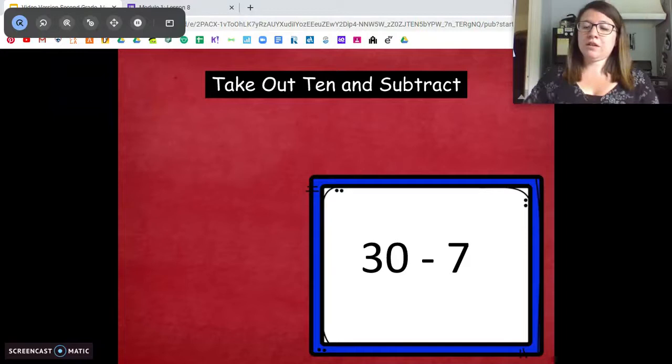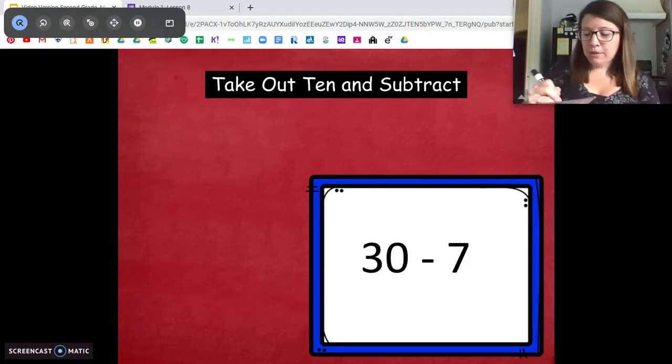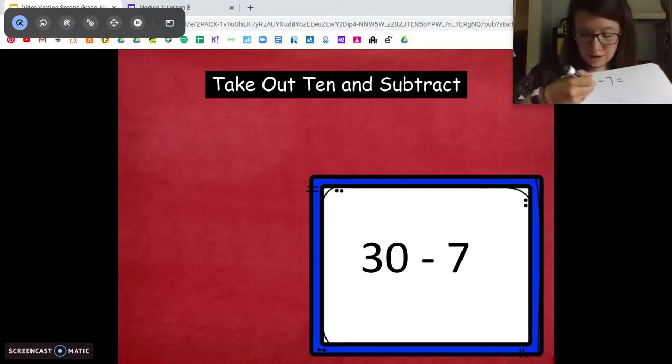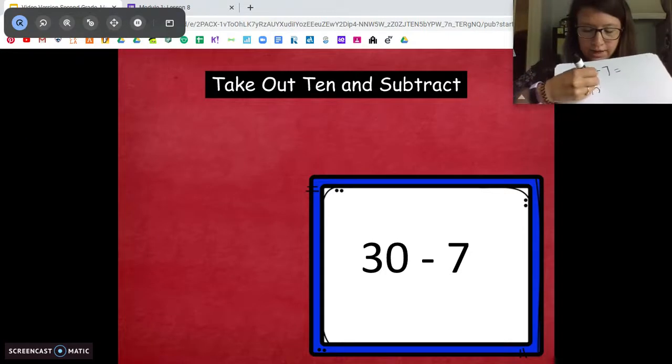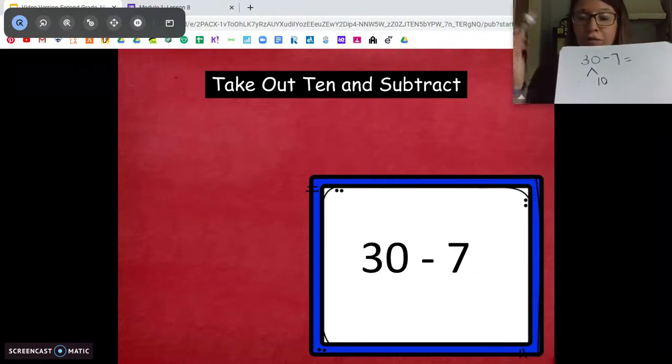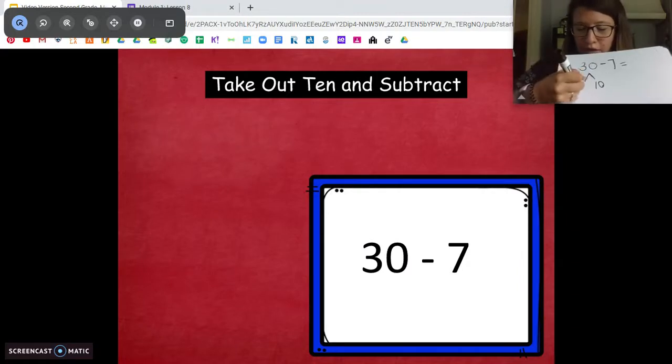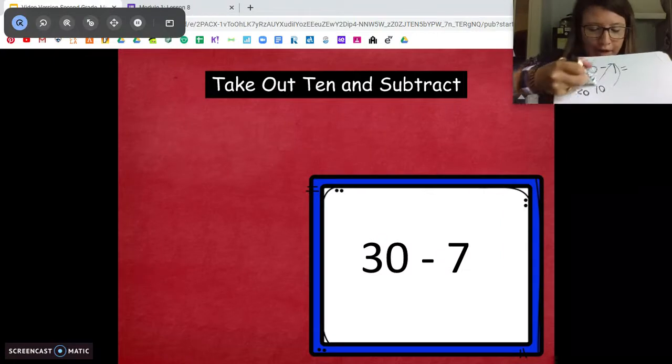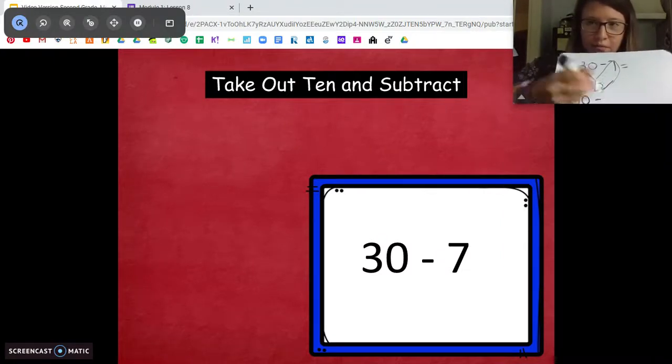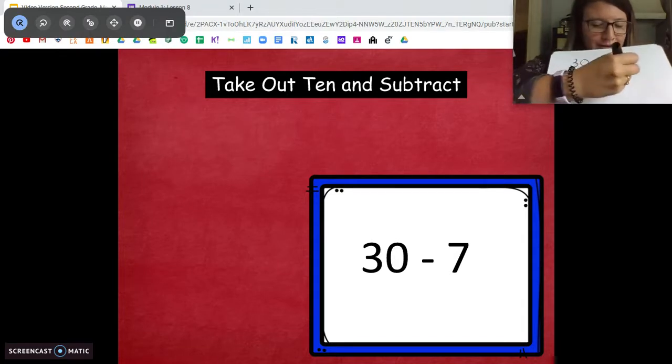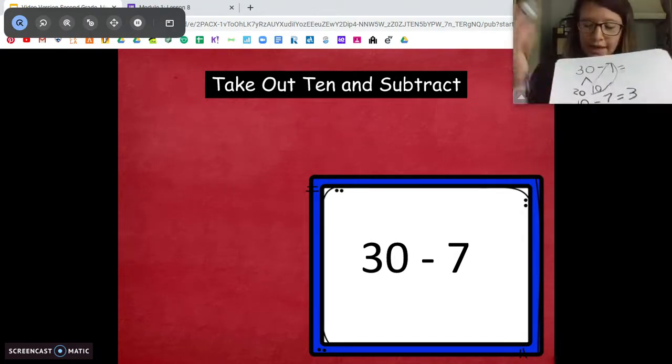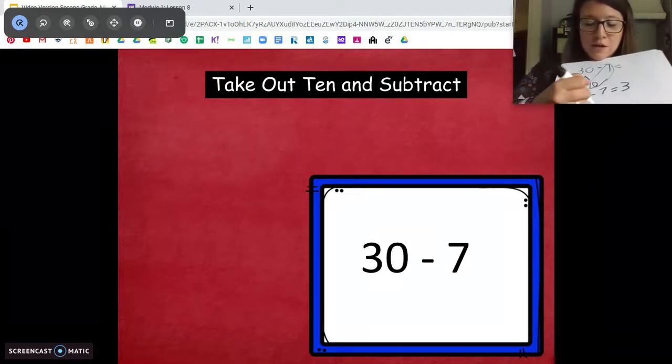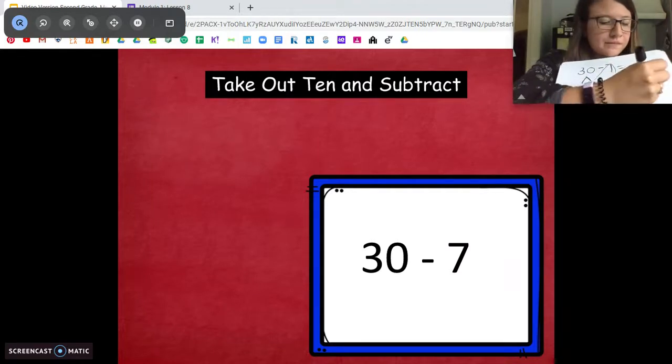The first problem is 30 minus 7. So I'm going to write 30 minus 7 on my paper. From there, I'm going to use the take from 10 strategy. So one of my parts is going to be 10, and I know 30 is made up of three 10s. So we have one 10 here and our other 10s here. 10 plus 20 equals 30. My next step is subtract from 10. 10 minus 7 equals 3. We know that fact. Then I'm going to take the 3 and add it to my extra 20 here, my extra group of 10s. 20 plus 3 equals 23. My answer is 23. I'm going to have you do that all on your own.